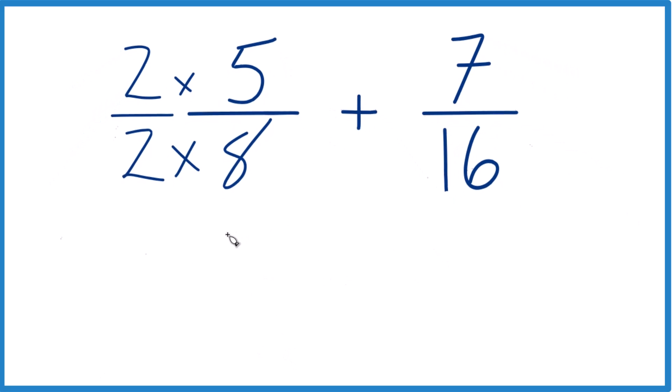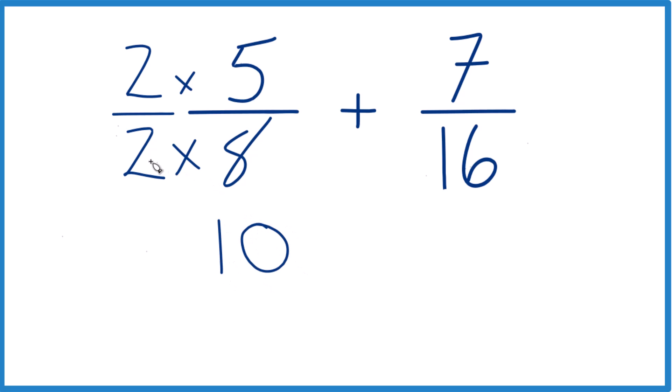So now we have 2 times 5, that's 10. And 2 times 8, that's 16. And 10 sixteenths, that's the same as 5 eighths. They're equivalent. They have the same value.